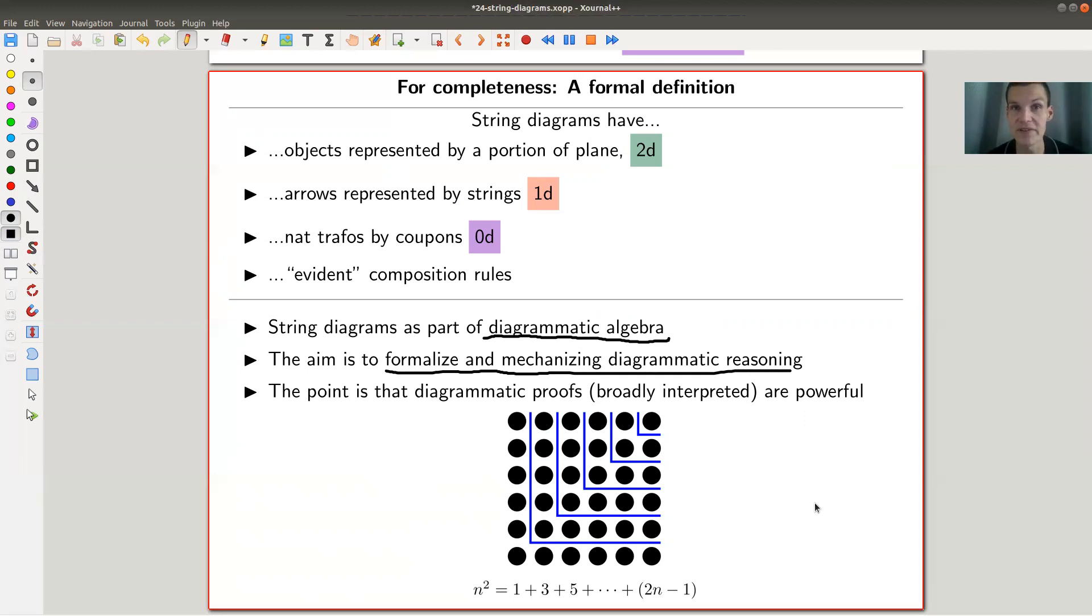it takes a while until you are convinced that arithmetic is actually something useful, and it might also take a while until you are convinced that diagrammatic reasoning is something really useful. Because the point is really that I want something like this for categories.